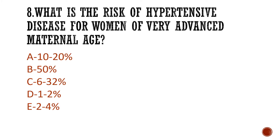Question 8: What is the risk of hypertensive disease for women of very advanced maternal age? Is it A) 10–20%, B) 50%, C) 6–32%, D) 1–2%, or E) 2–4%? The answer is 6–32%.